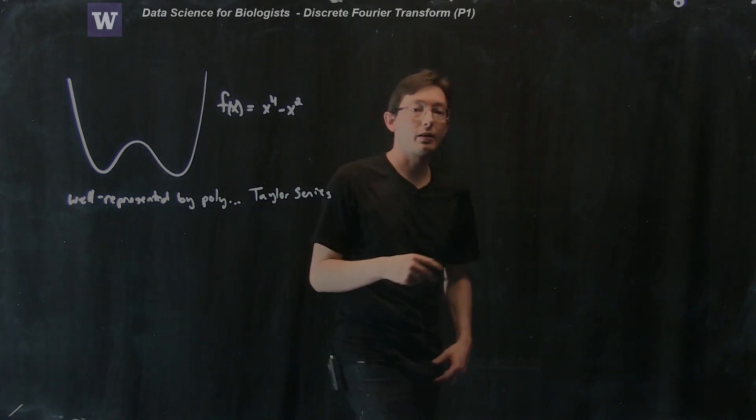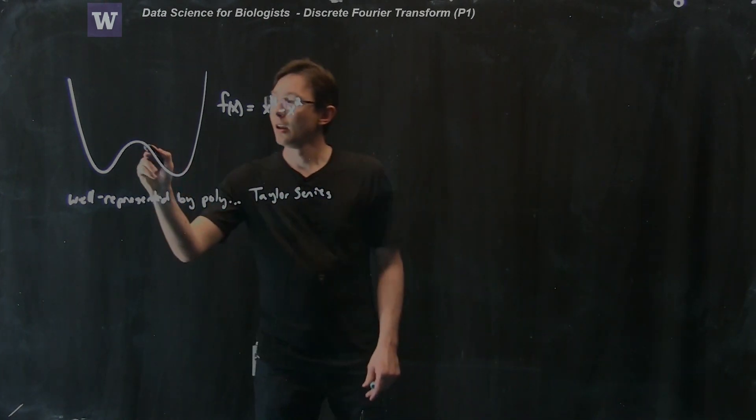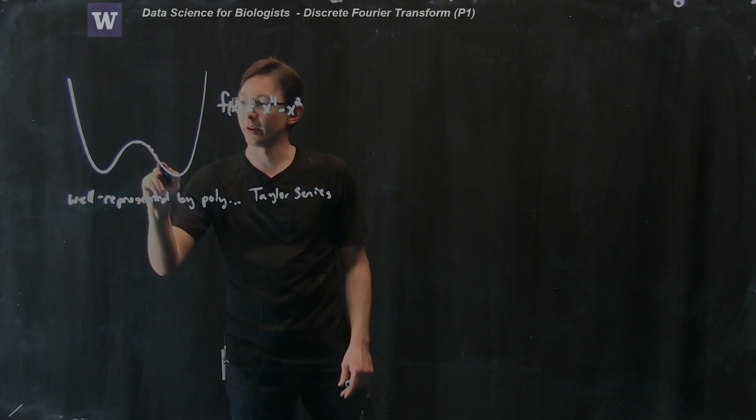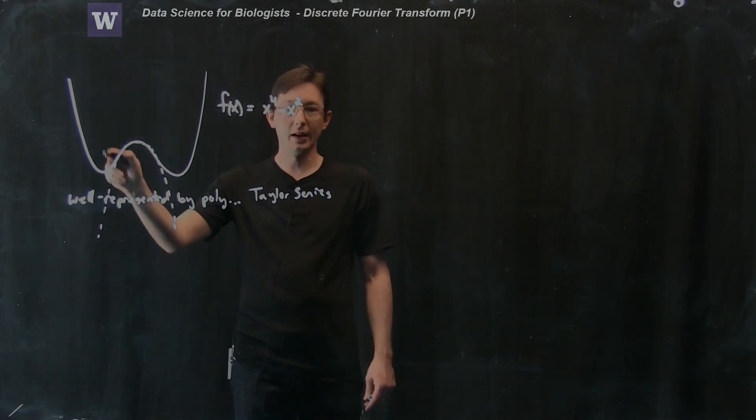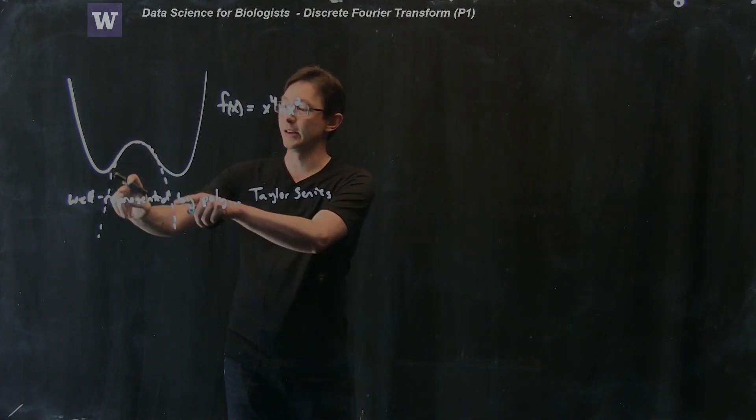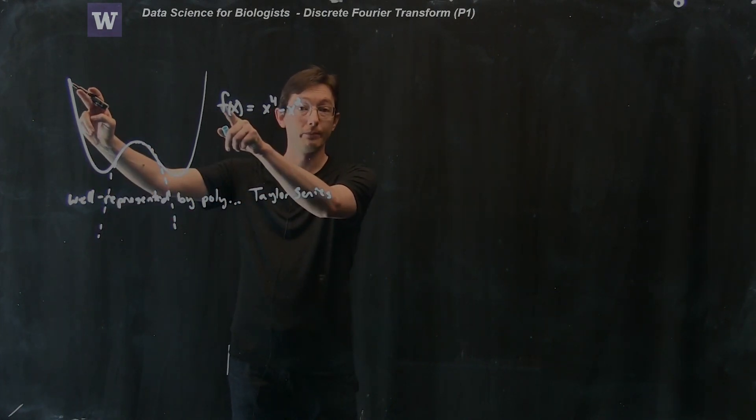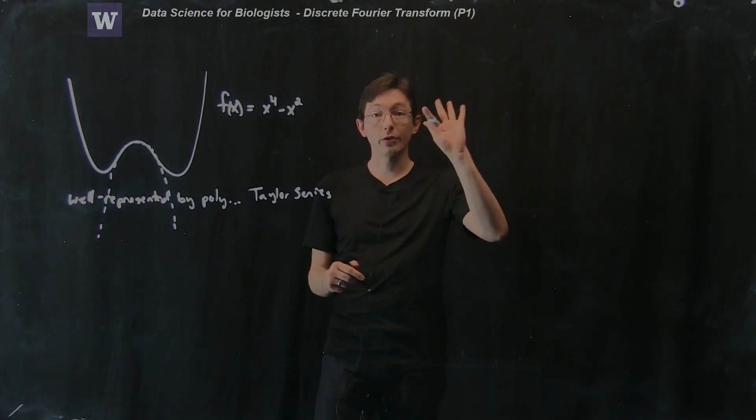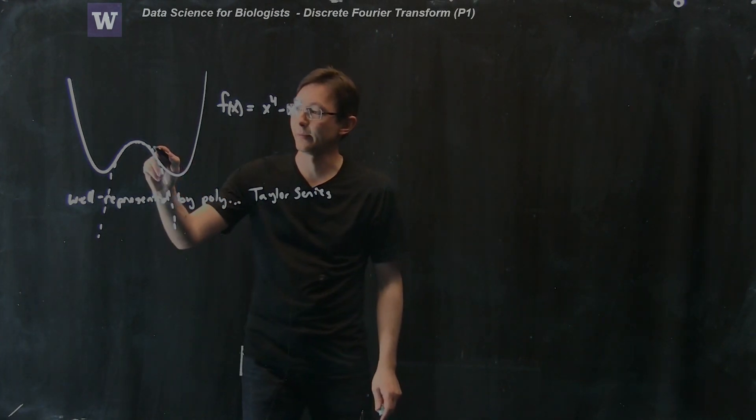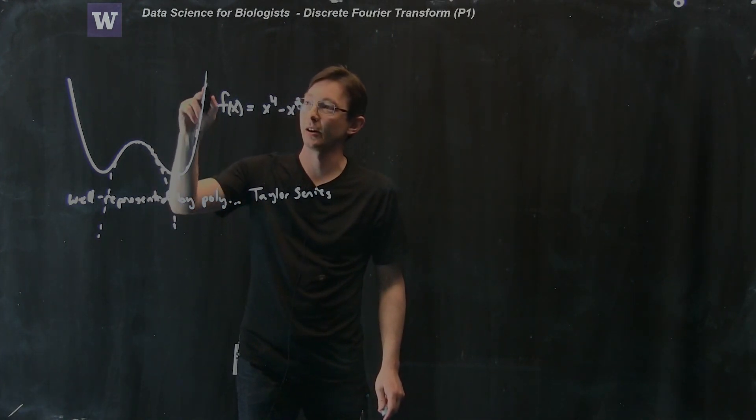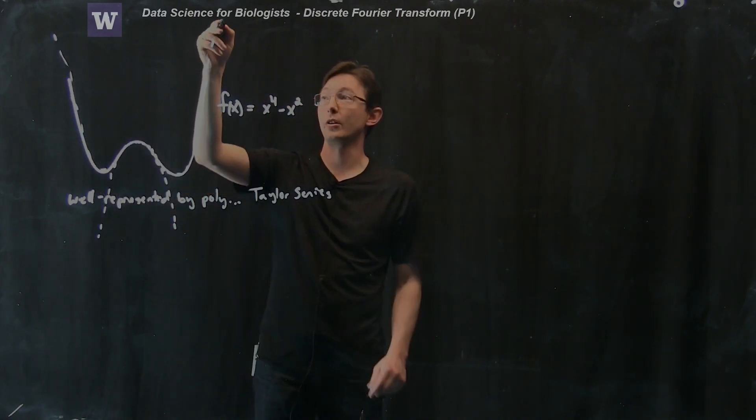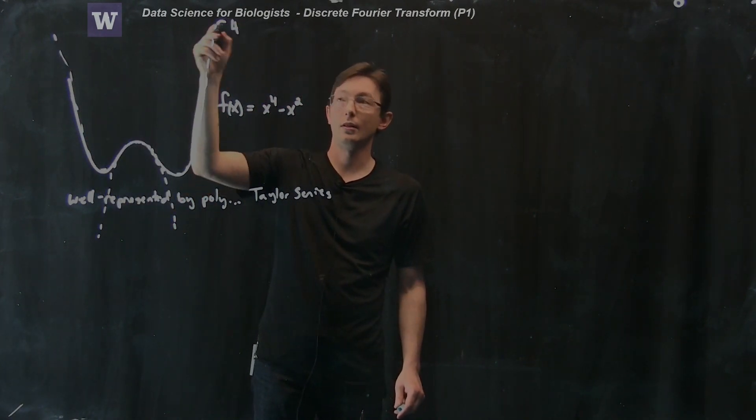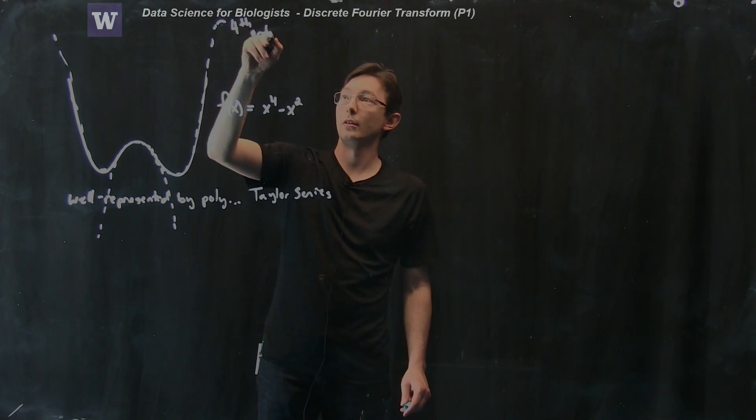And in particular, if I had a second order Taylor series expansion, then I would approximate this function with a parabola. And it would actually do pretty good in this region here, but it would disagree with my function far away. But if I had just a fourth order Taylor series approximation, then I would perfectly reconstruct this function because the function itself is just a fourth order polynomial.